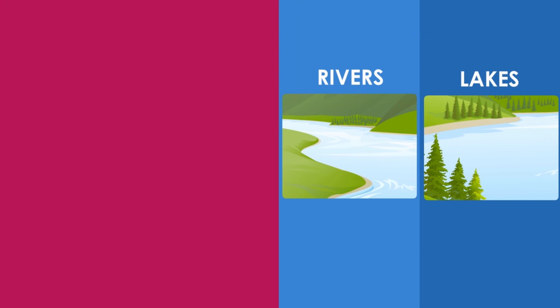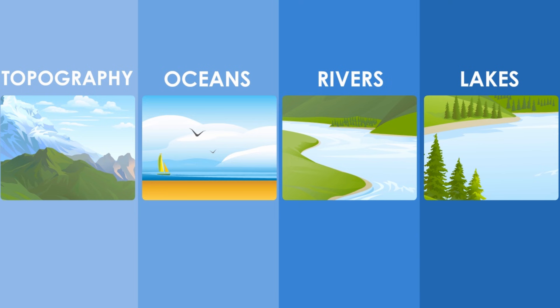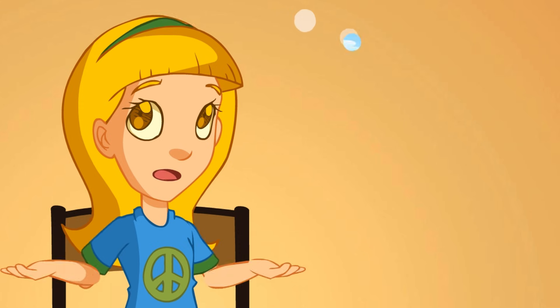Physical maps show where lakes, rivers, and oceans are located. They also show the topography of the area, as on this map. What do you mean by topography?